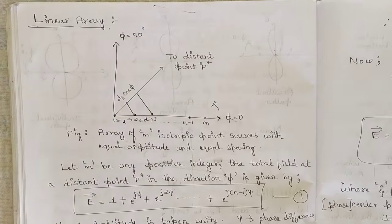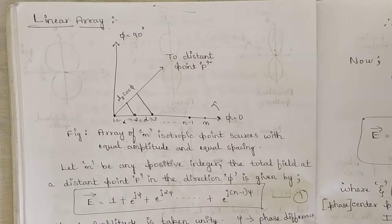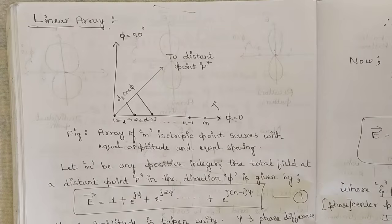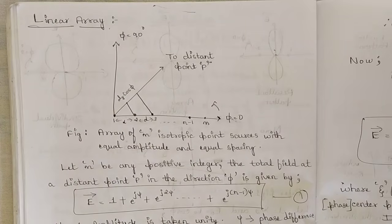Hello everyone, welcome to this new video. In my previous video I discussed the concept of arrays of two non-isotropic point sources, along with the concept of pattern multiplication — the expression derived from non-isotropic point sources, and how individual patterns and array patterns are combined with respect to magnitudes and phases. Those who haven't seen that video, please go and watch it — it's available just before this video.